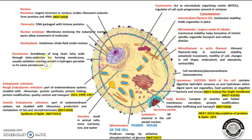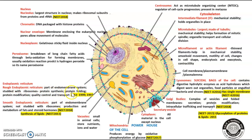Peroxisomes are named so because their oxidation reactions produce the byproduct hydrogen peroxide. They are typically involved in the breakdown of long-chain fatty acids through beta-oxidation and are involved in formation of membranes. Rough endoplasmic reticulum is a part of the endomembrane system studded with ribosomes — hence the name 'rough.' It is involved in protein synthesis, protein folding, protein modification, quality control, and transport. Partly protein modification occurs in rough ER and partly in Golgi bodies.